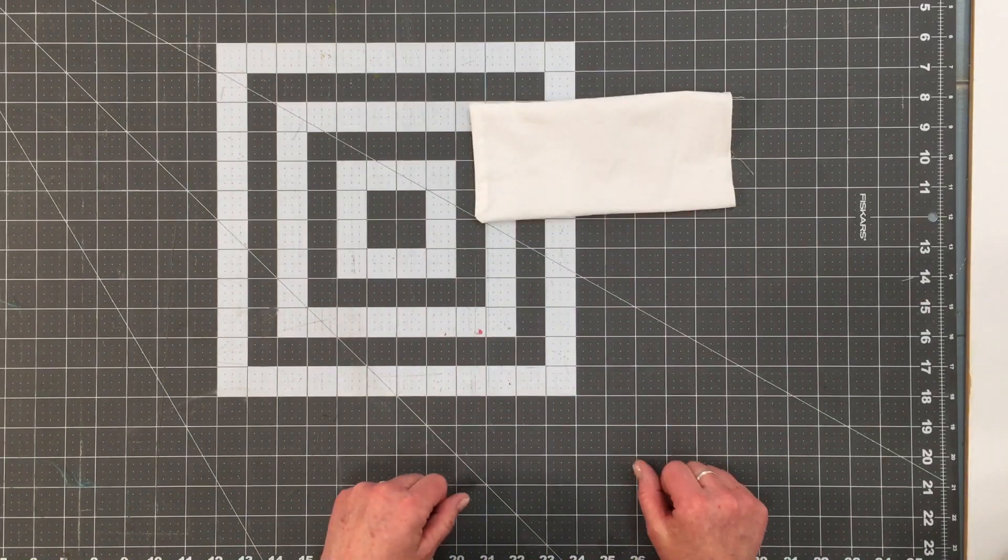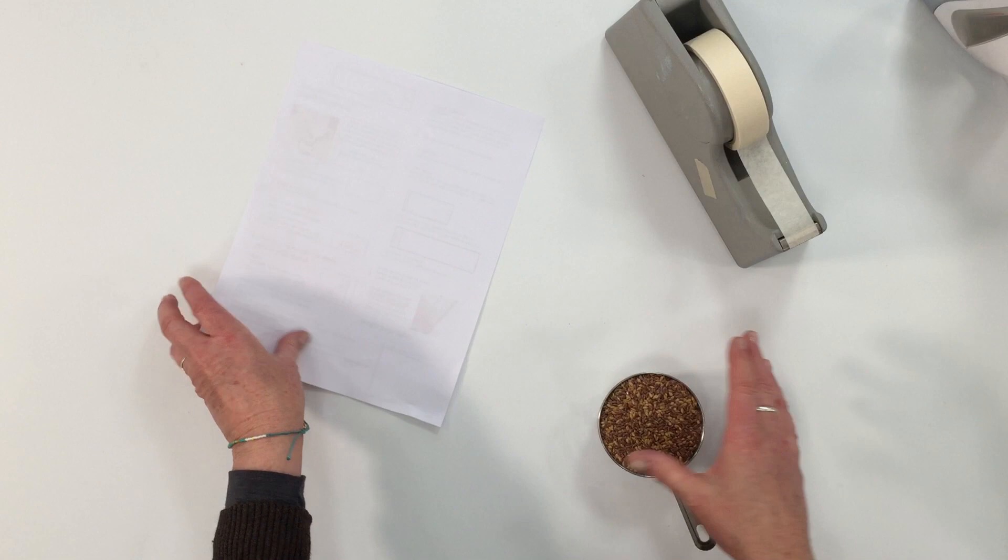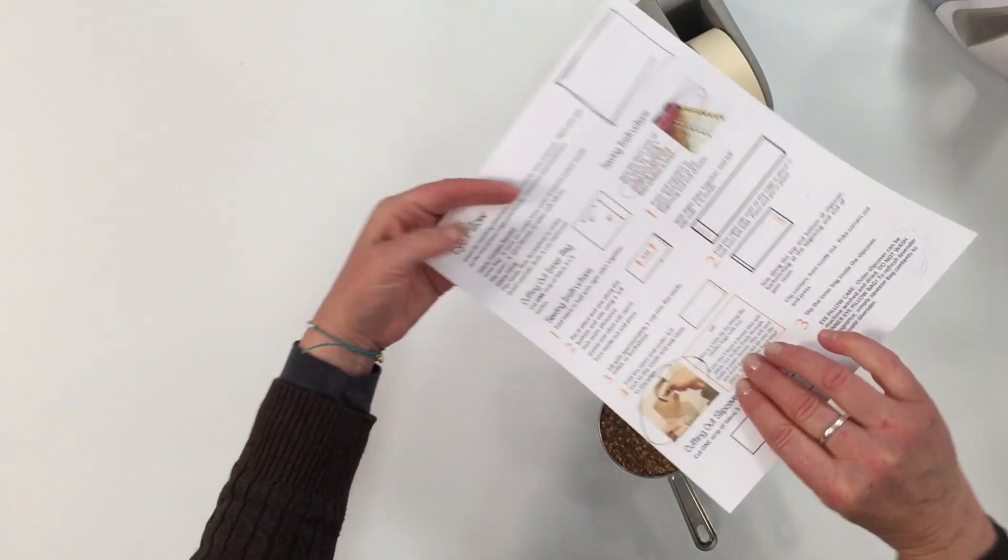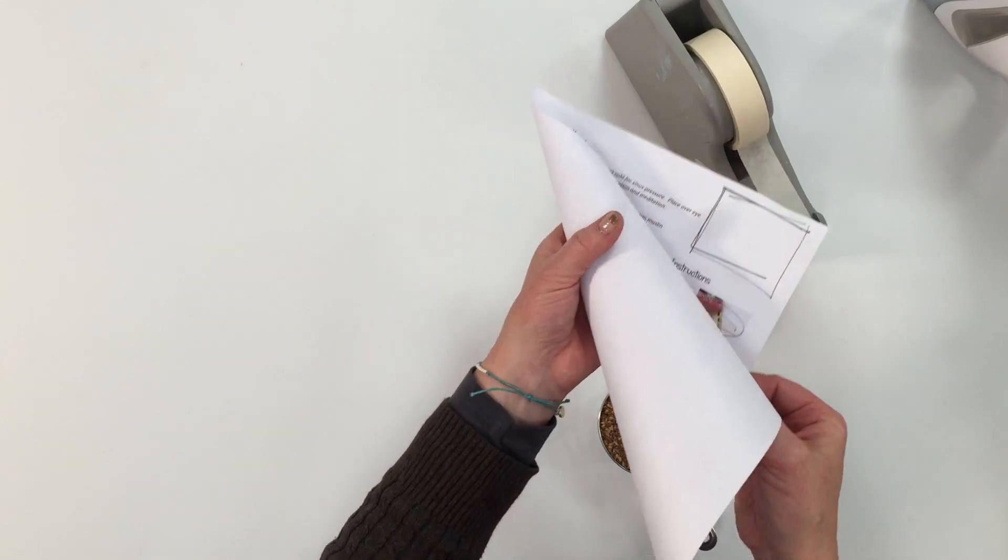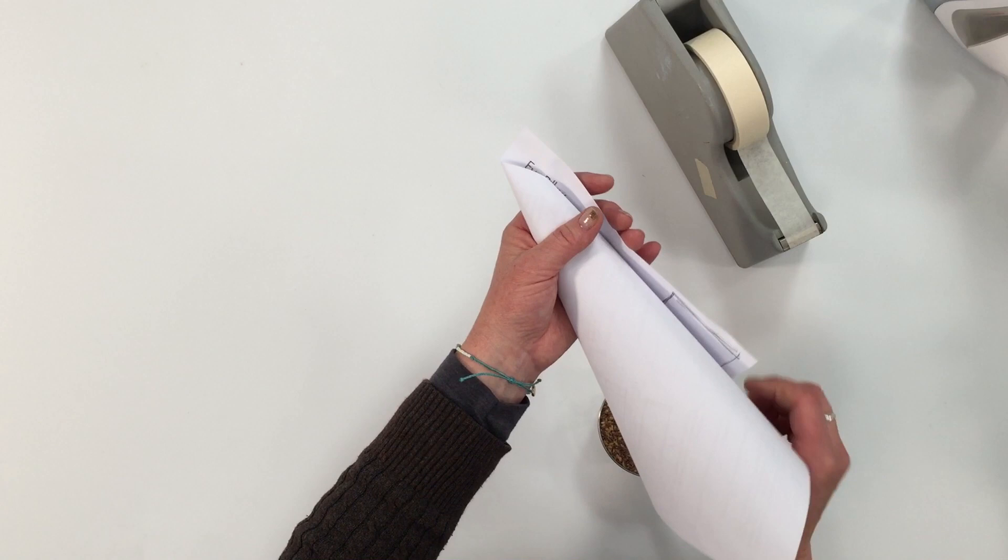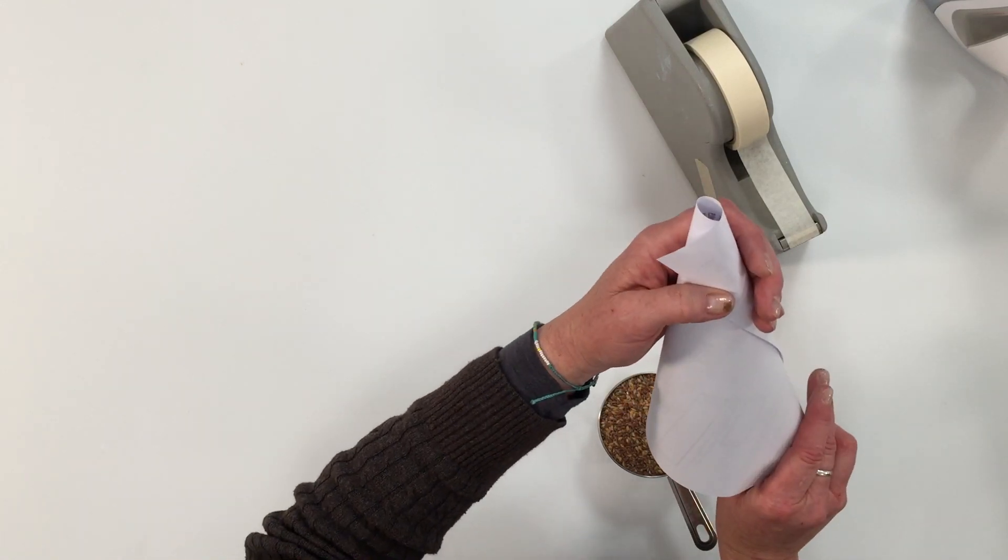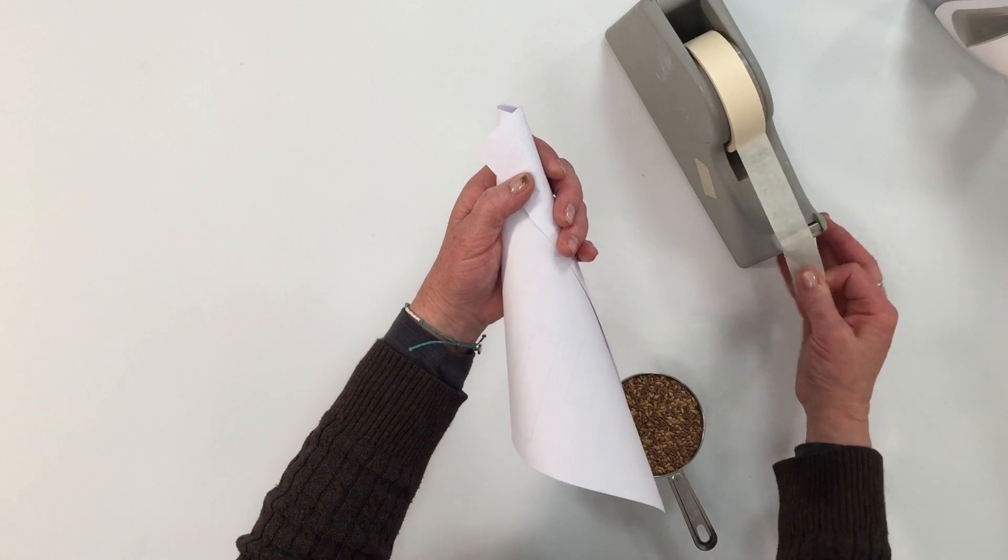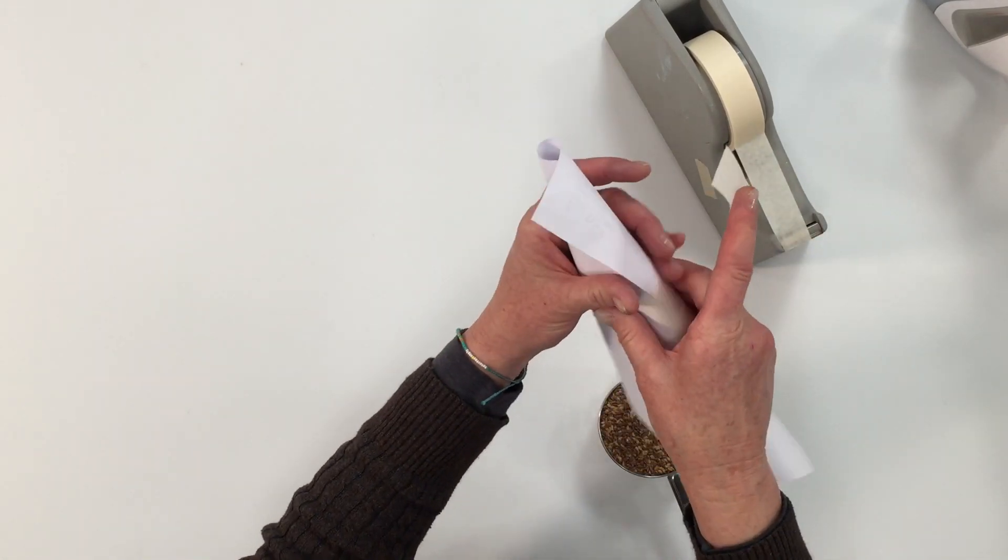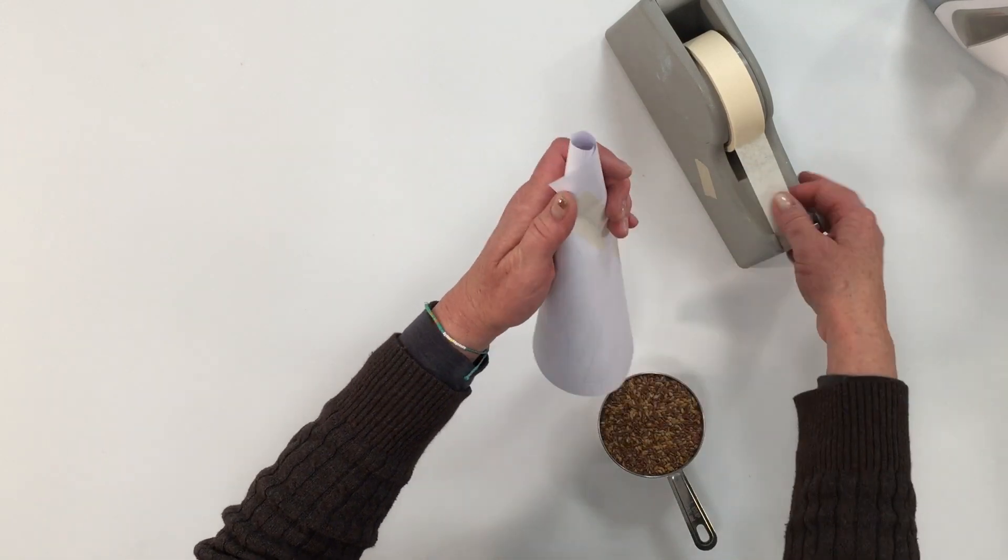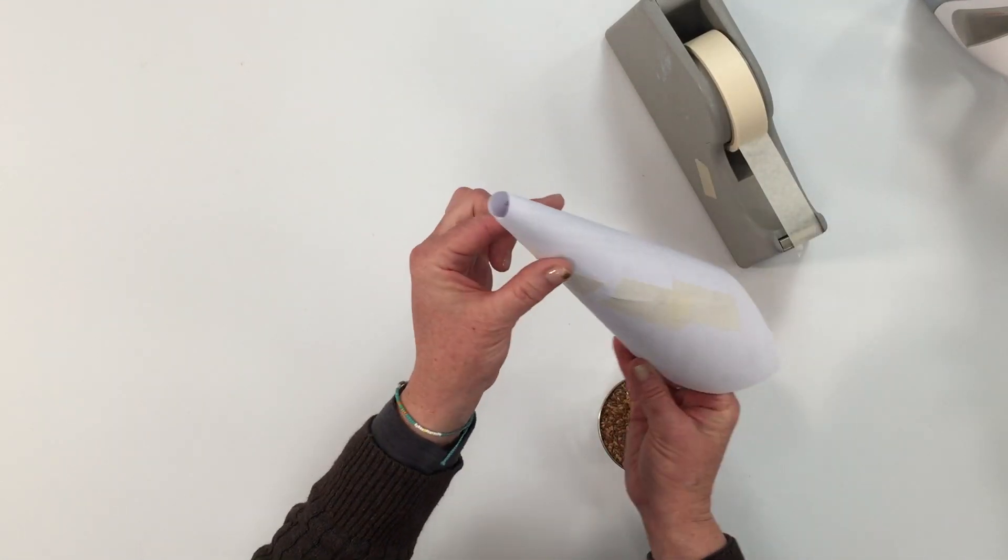Set that aside and we're going to make a little funnel out of a piece of paper and tape to fill the bag. So to make the funnel, just take a regular eight and a half by eleven sheet of paper and take a corner and fold it under so it makes a point like a little hat, like a paper hat, and you don't want the end to be too small. Just about like that and take a piece of tape. It doesn't have to be fancy; you are just using it to fill this eye pillow.